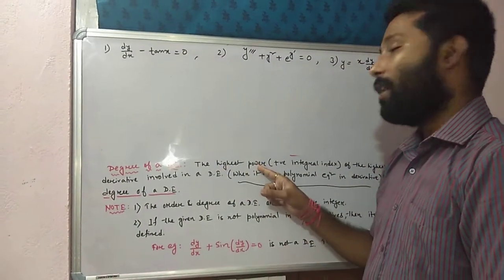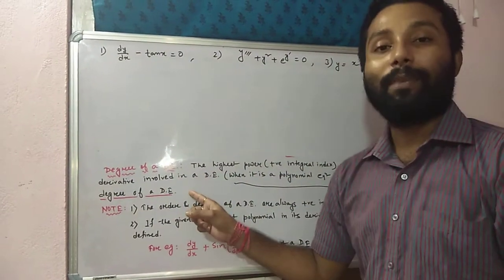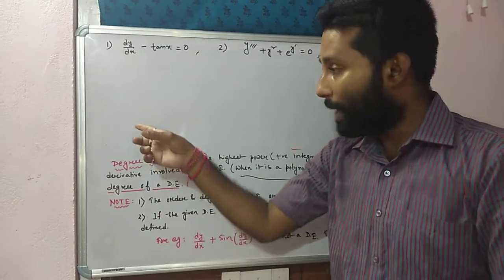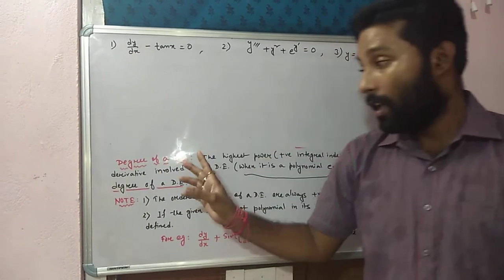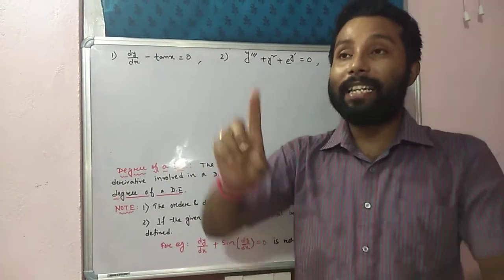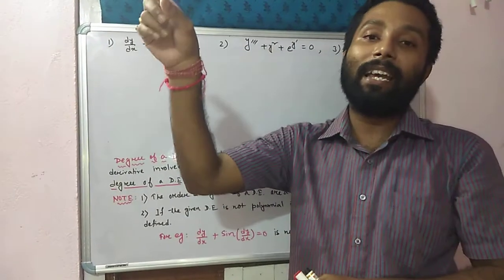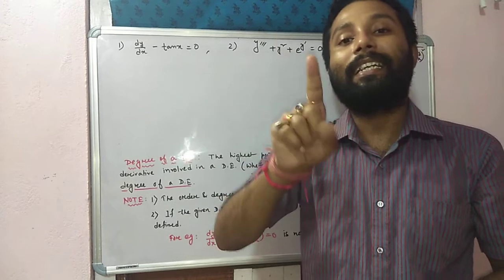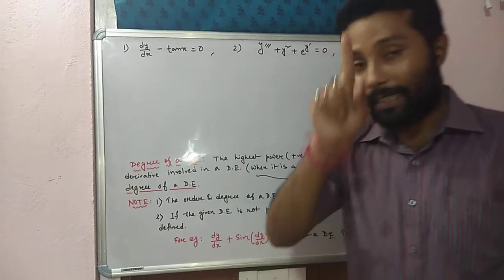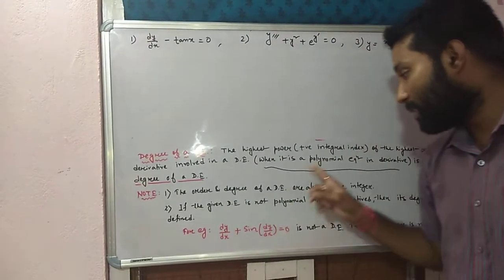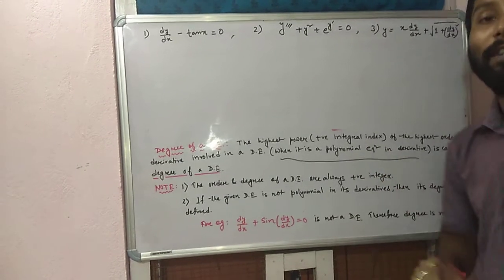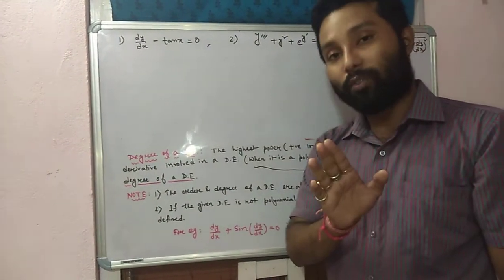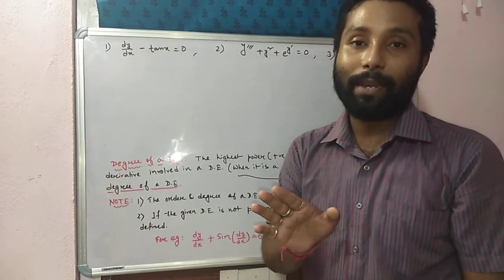The highest power of the highest order derivative. A differential equation ka jo highest order hoga, pehle mein bata diya tha order ka definition. Jo highest order hoga, us highest order ka jo power hai, that should be a positive integer. Wohi power degree hoga. But that differential equation must be a polynomial equation in its derivative. Agar polynomial equation in its derivative nahi hoga, toh we cannot determine degree.